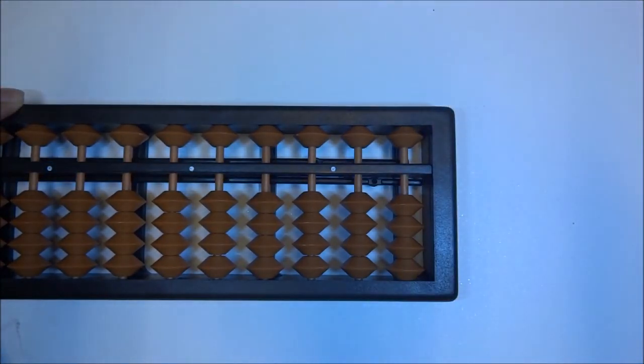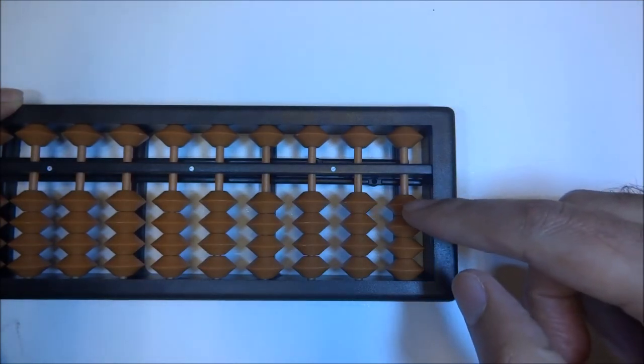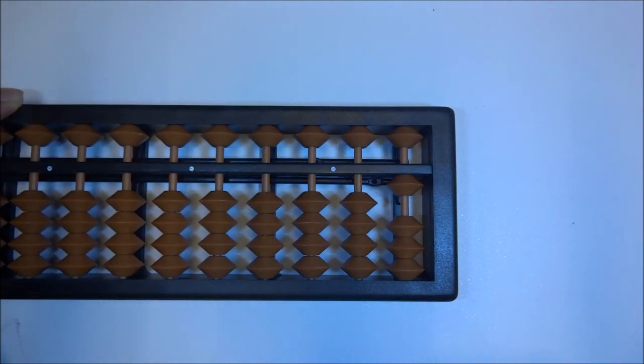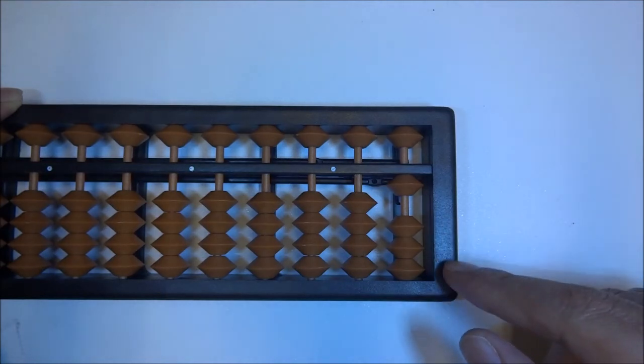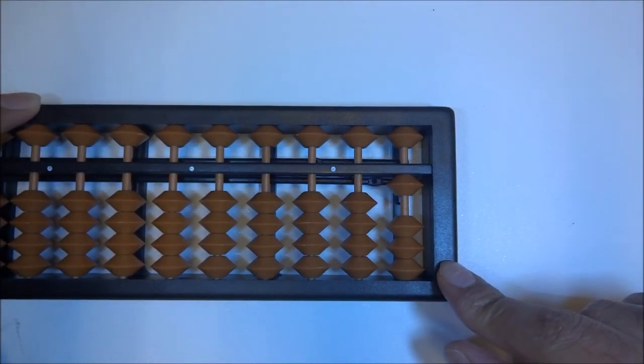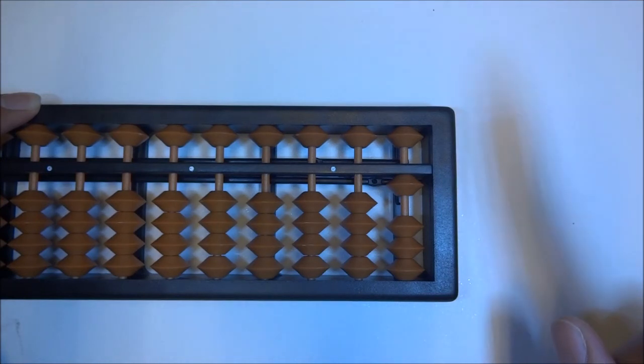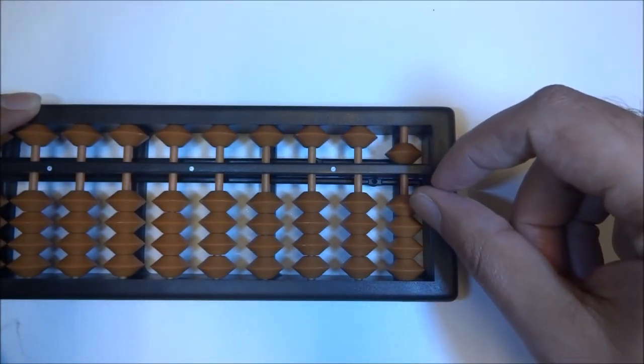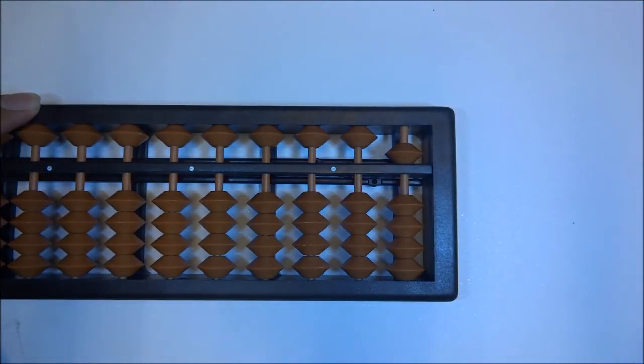1 plus 4 is what we want to do. 1, up 4. But we don't have 4 beads. So we're going to find the little friend of 4, which is 1. So we're going to say up 5 and down 1. Up 5 and down 1. 1 plus 4 is 5.